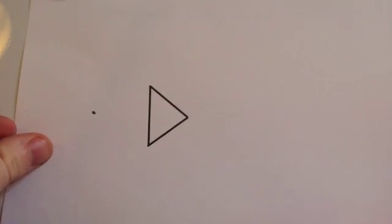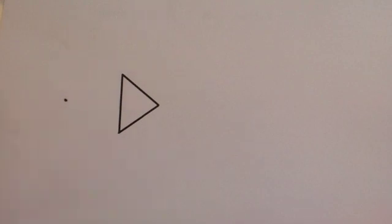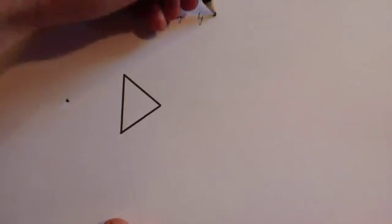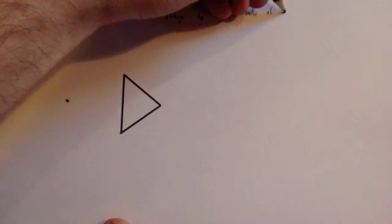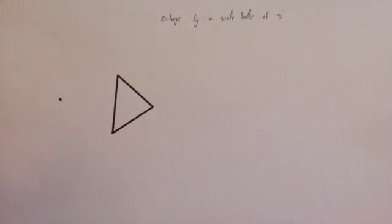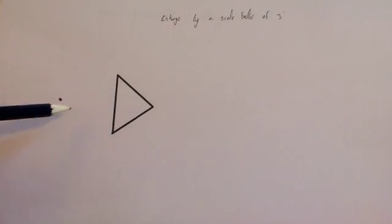This is the Ray method for a shape which isn't on a coordinate grid, and we're going to enlarge this by a scale factor of 3. We've got our center of enlargement and we've got our object. This is what we're going to enlarge, and this is where we're enlarging it from.